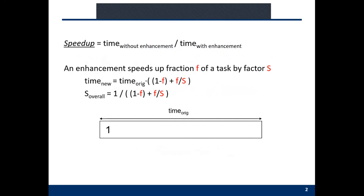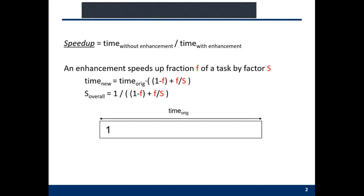The first problem in computer organization or computer architecture is: I have a very fancy architecture technique which potentially can accelerate a part of your computer a lot. But the question is whether I need to implement this fancy technique into the current computer system. This equation can help you answer that question. The speedup equals the execution time without your fancy technique divided by the execution time with your fancy technique. This equation is called Amdahl's Law.